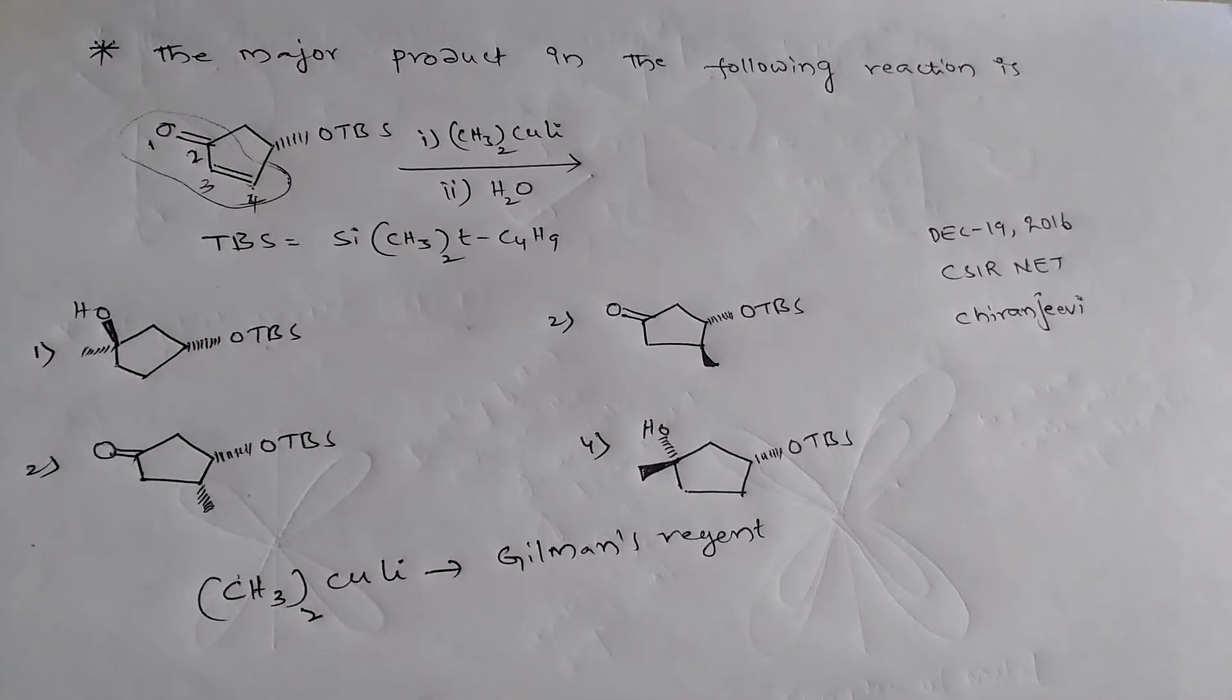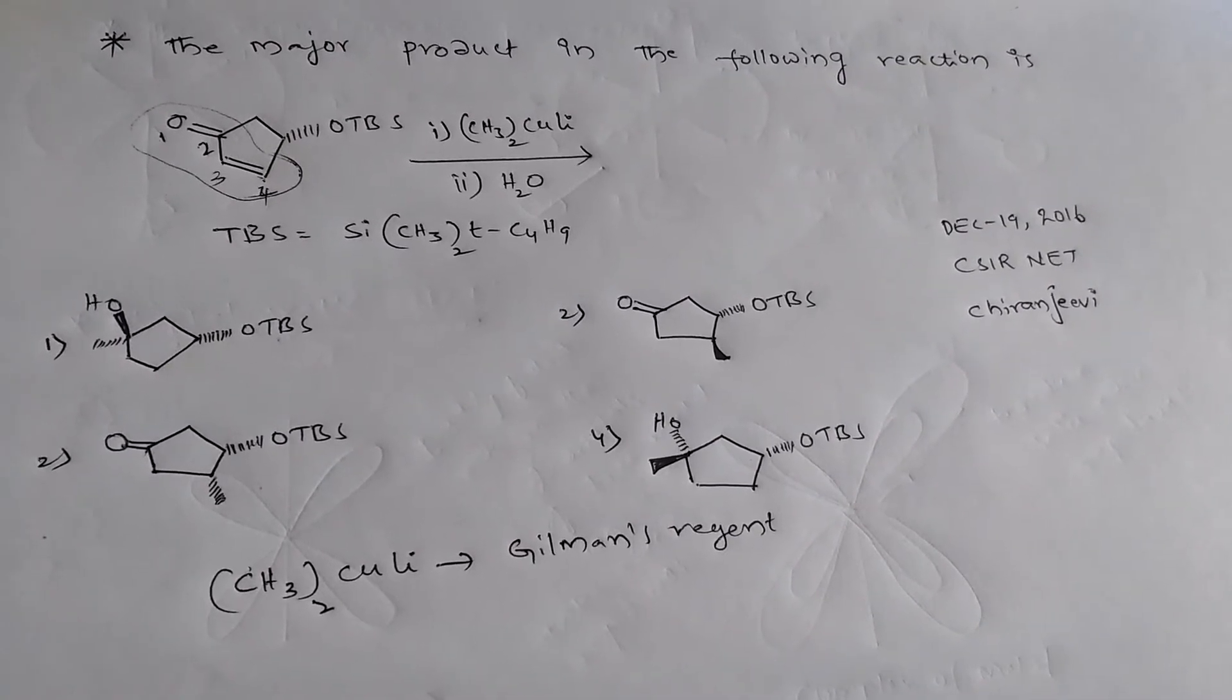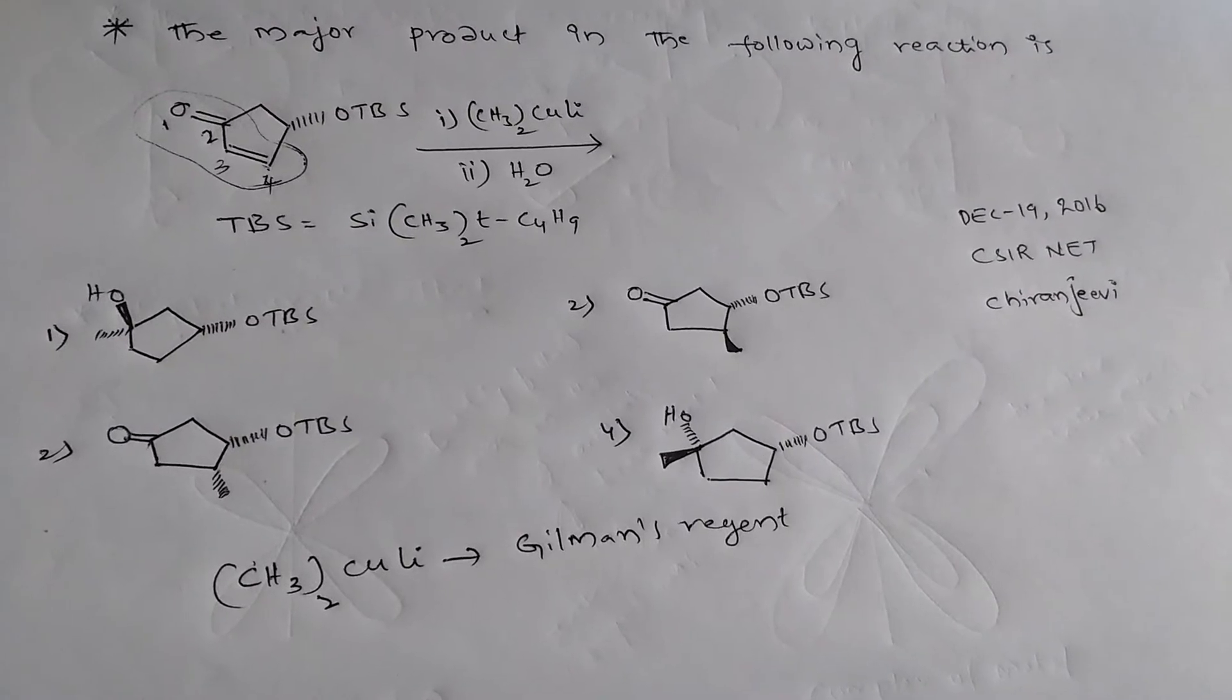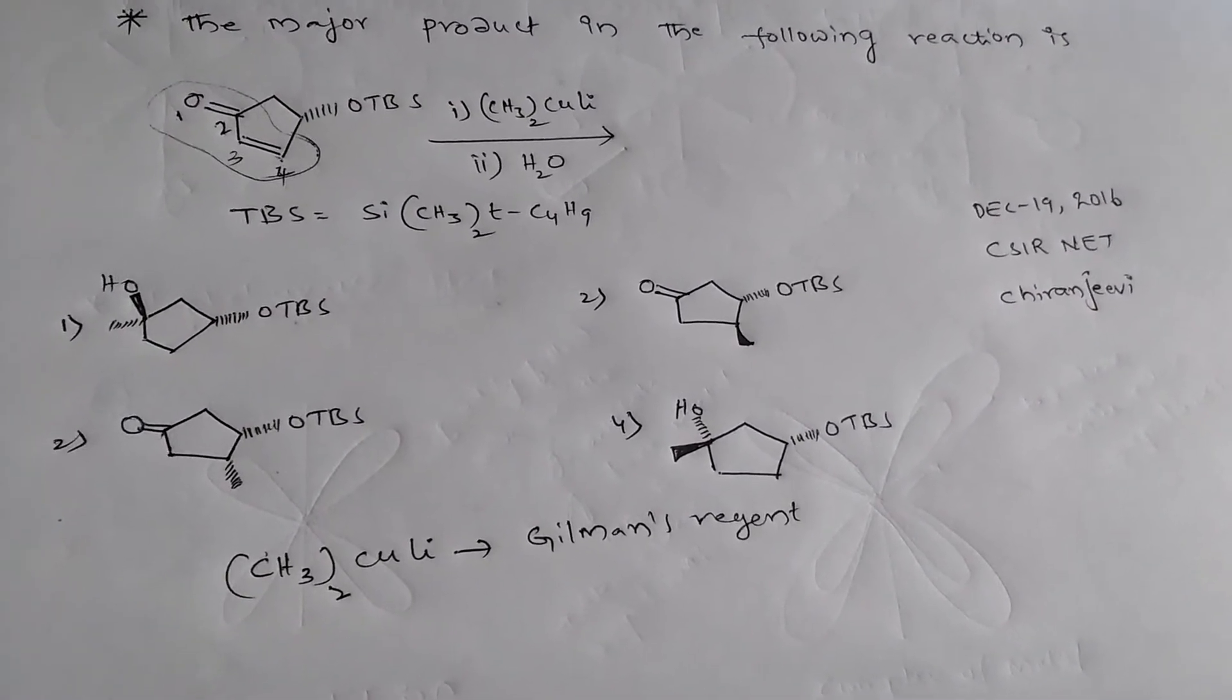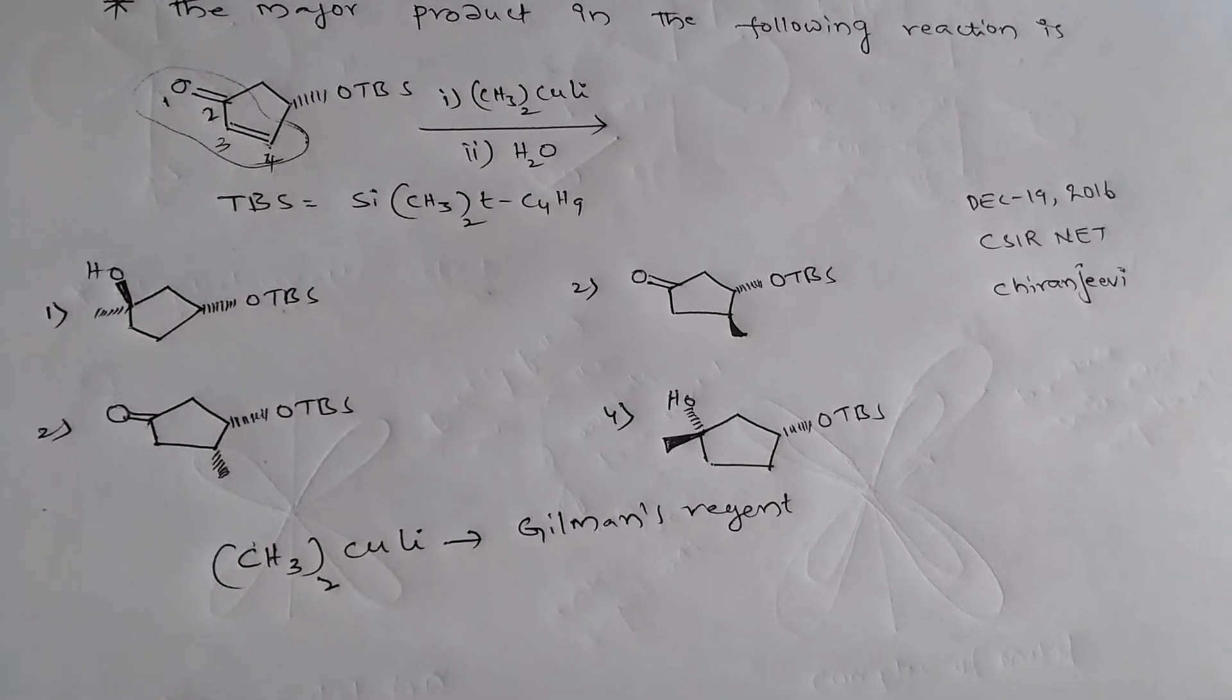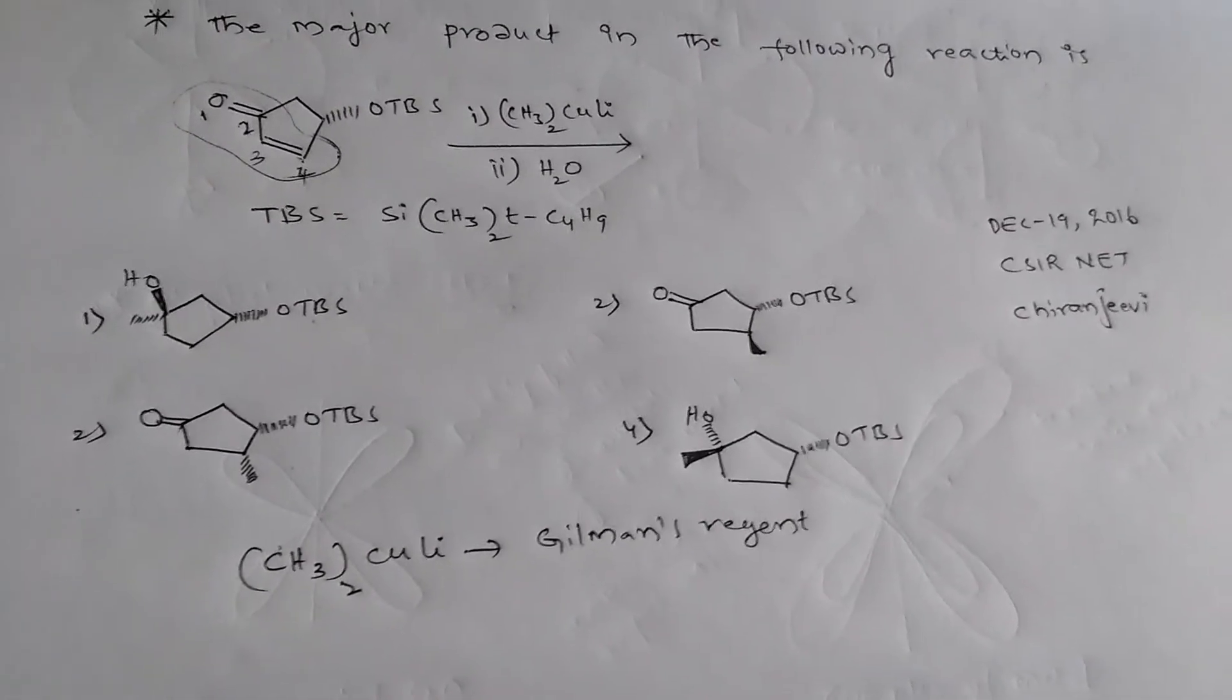The question is, the major product in the following reaction is, so that is a reaction, so what is the product? And the major reagent is dimethyl cuprous lithium. This is simply called as Gilman's reagent.